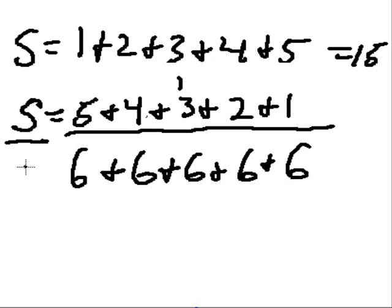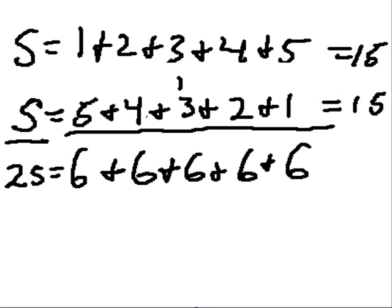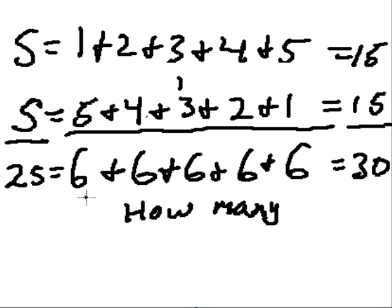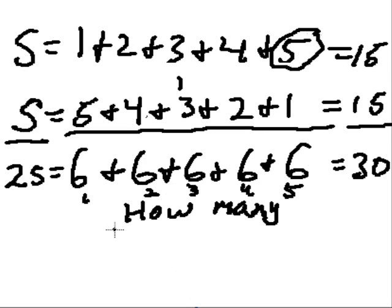Isn't that amazing? Let's add up the s's. There are 2 s's, so 2 times s is equal to 6 plus 6 plus 6 plus 6 plus 6. How many 6's do we have? 1, 2, 3, 4, 5 — we have 5 of them. So I can rewrite that as 5 times 6.